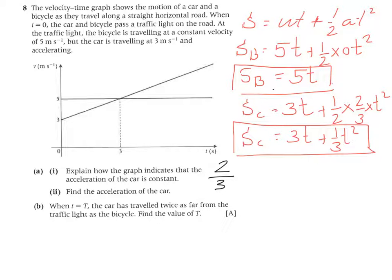Now they say that at a particular moment the distance travelled by the car is twice as far. So what is the value of T when this is twice as much as that? So how can I find that? I am going to say so 5T equals 3T plus a third T squared. But I am not interested when they are equal. I am only interested when the car's displacement is double. So I am going to multiply this one by 2.